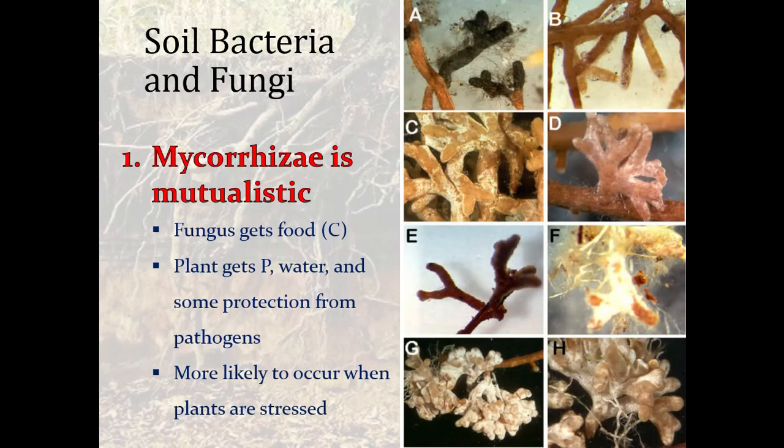Mycorrhizal fungi form a mutualistic relationship with plants: the fungus receives carbon, and the plant receives phosphorus, water, and possibly protection from pathogens. Mycorrhizal fungi also serve to exponentially increase the surface area of a plant's root system to acquire additional resources.